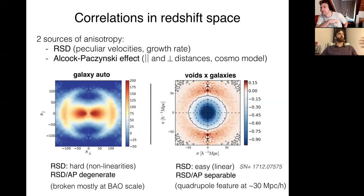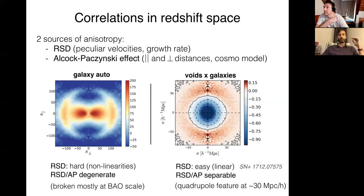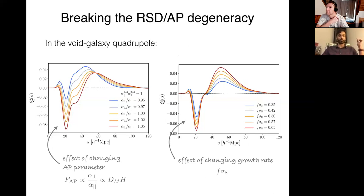There's another more technical aspect: in large parts of the galaxy auto-power spectrum or correlation function, the effects of galaxy motions and the Alcock-Paczyński distortion actually produce very similar observable effects on the spectrum, so it's quite hard to separate what's been caused by what. Whereas in the void-galaxy cross-correlation, the velocity distortions have a completely different signature from the distortions that come from having the wrong cosmology.